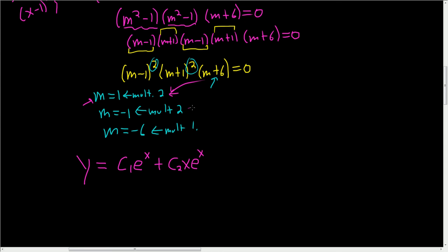Now let's work with this one. So it's going to be plus c3, e to the negative 1 times x, so simply negative x. But the multiplicity is 2, so we have to do it one more time. So plus c4, x, e to the negative x.